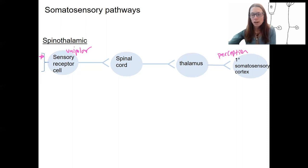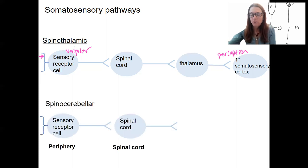Two different tracts, lateral and anterior. The second somatosensory pathway is unconscious. So this is going to be more like body position, proprioception, where our body is in space.